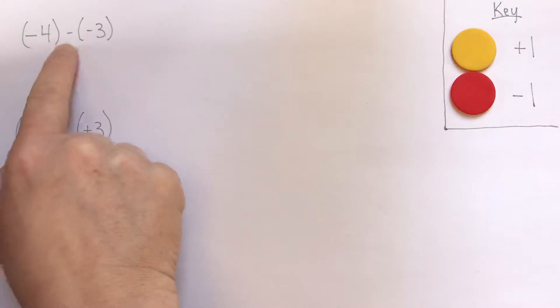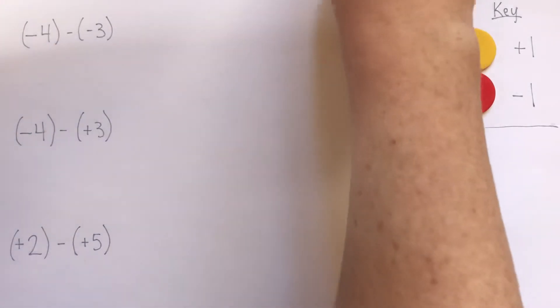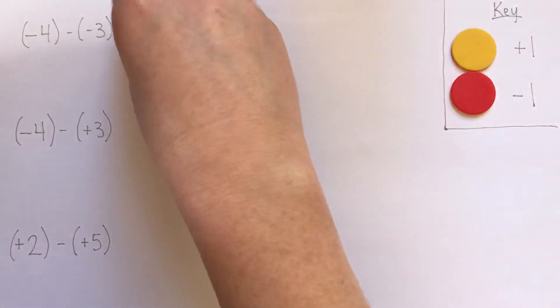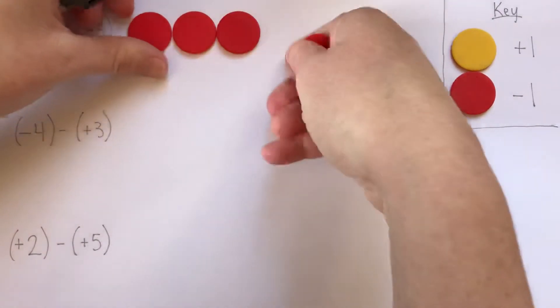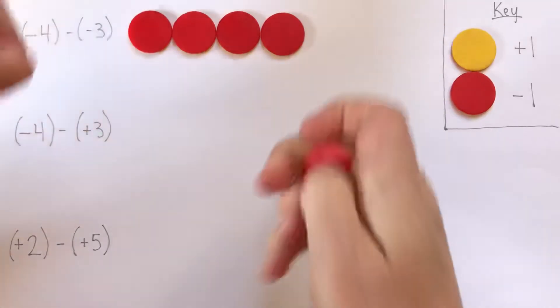First we have negative 4 subtract negative 3. So let's start here. We'll put out negative 4. I want reds for negatives. We've got negative 4.